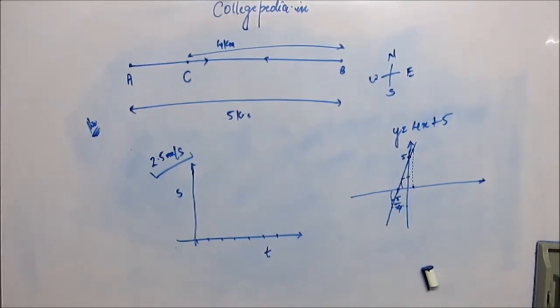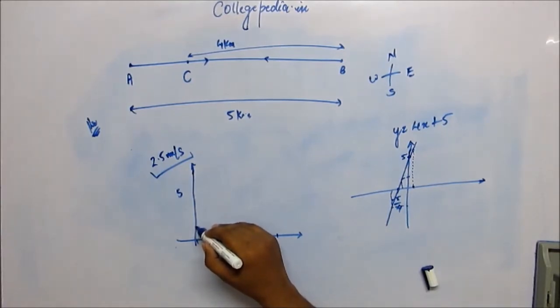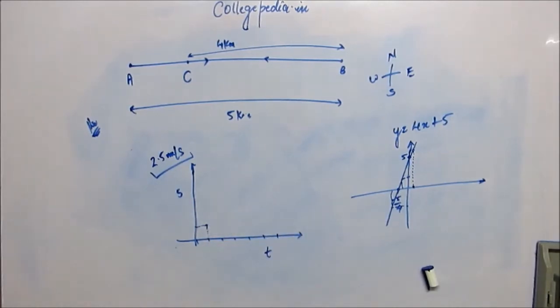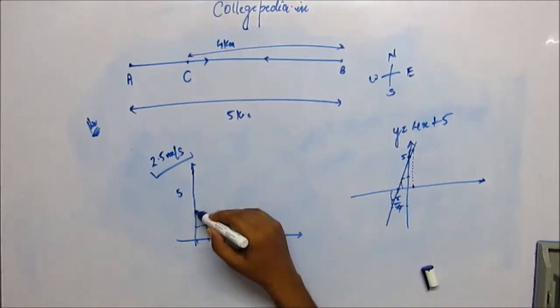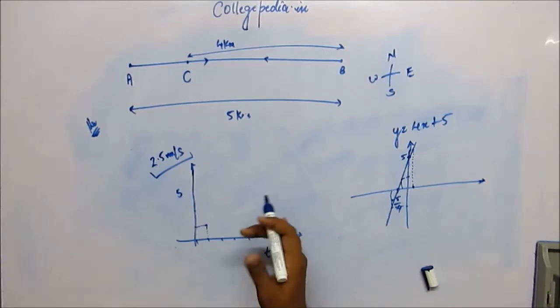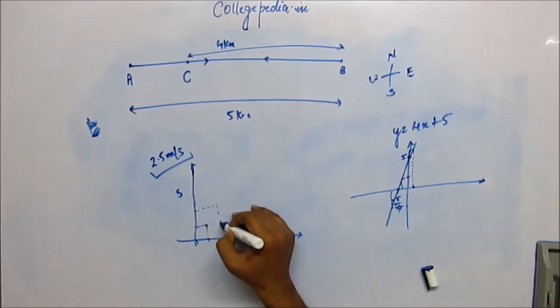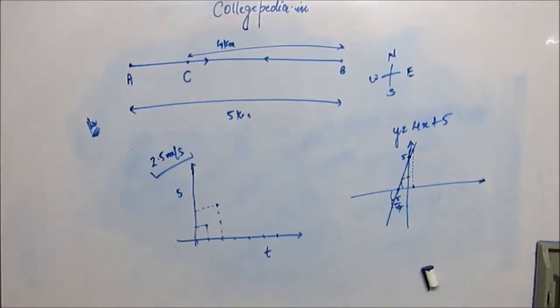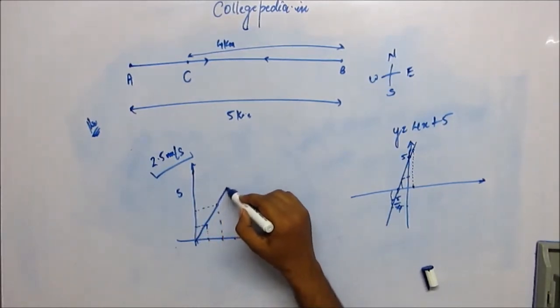Speed is constant, that means for equal interval of time, there would be equal increment in distance. Because speed is distance travelled per unit time. So if speed is constant, that means for every unit of time, the distance travelled is constant. So for the first unit of time, the distance travelled is this much, then after completion of first unit of time, the body has come here. Now after completion of second unit of time, the body would have travelled equal amount of more distance and the body would have come here. Similarly, for the next unit of time, the next increment on the x-axis, you will have the same amount of increment on the y-axis. So you are actually going to get a straight line like this.